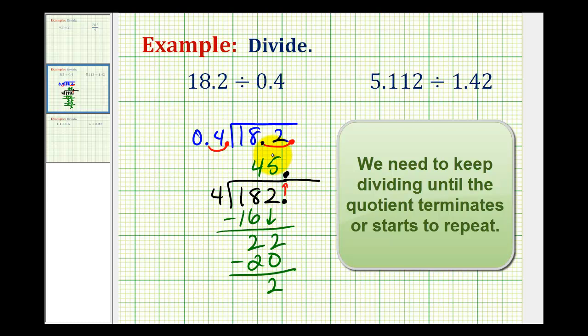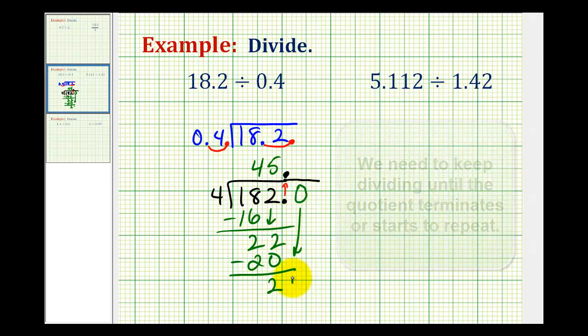So we want to bring down another digit. And the way we do this is we add a 0 to the right here, which is adding a 0 to the tenths place value, which does not change the value of 182. So now we can bring this 0 down.